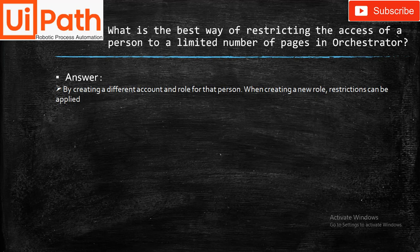What is the best way of restricting the access of a person to a limited number of pages in Orchestrator? Answer: By creating a different account and role for that person. When creating a new role, restrictions can be applied — for example, an administrator login can manage everything, while a training or view-only account will only have view access and cannot make changes.